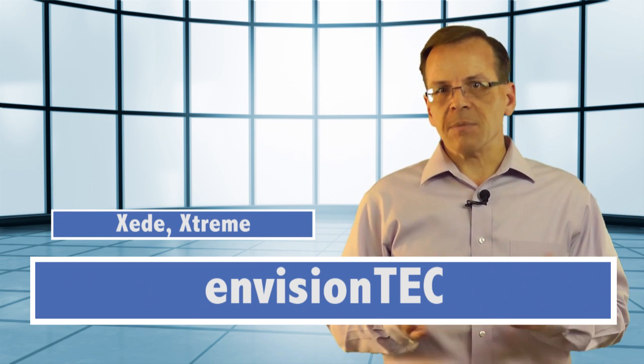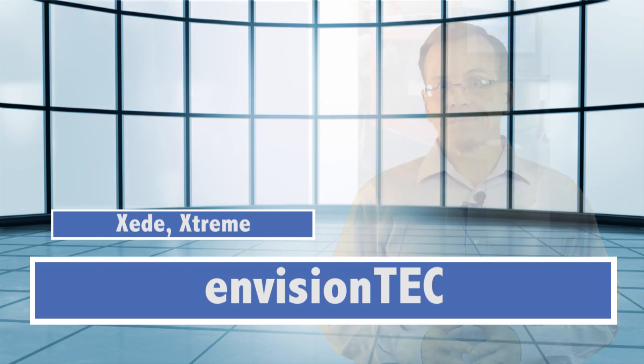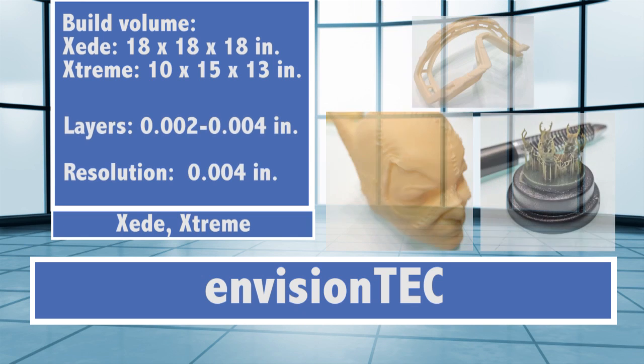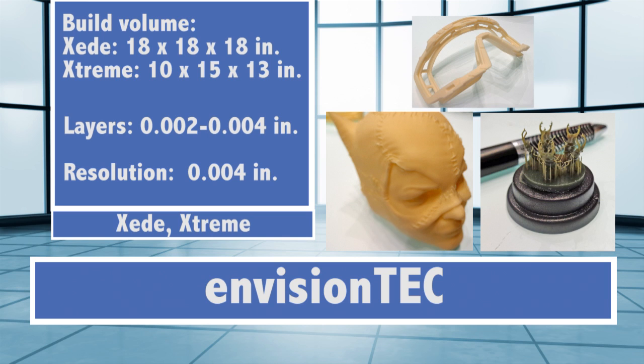3SP, simple concept with very few moving parts, so it is a user-serviceable unit. The XL-SEDE and XSEDE differ only in build size, 18 x 18 x 18 inches for the XL-SEDE and 10 x 15 x 13 inches for the XSEDE. Both offer 0.002 to 0.004 inch layers and XY resolutions of 0.004 of an inch, which makes for some pretty nice looking parts.